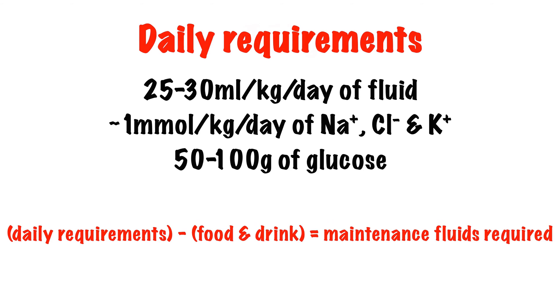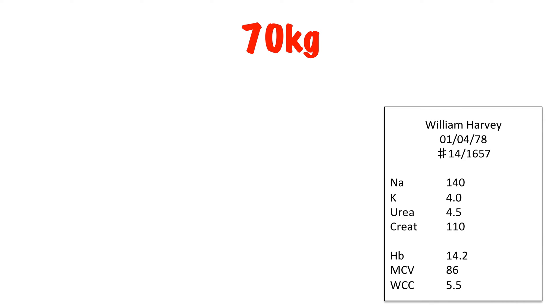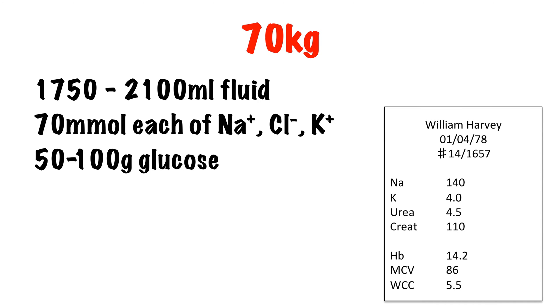So let's say that our patient weighs 70 kilos and appears to have a normal body habitus, and their U&Es are normal. That works out at between 1,750 and 2,100 ml of fluid, approximately 70 millimoles each of sodium, chloride, and potassium, and 50 to 100 grams of glucose. For ease, I'm going to assume, however unlikely, that our patient is not eating or drinking anything, and therefore requires all this as maintenance fluids.